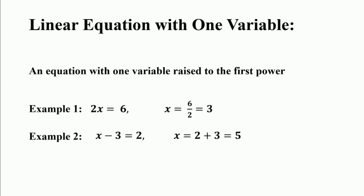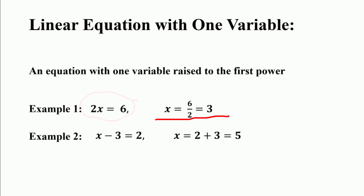How do we solve a linear equation with one variable? For solving an equation with only one variable, first use LCM to clear any fractions. Then simplify both sides of the equation, isolate the variable, and verify your answer. So for 2x is equal to 6, by isolating x we get 6 divided by 2, which equals 3.